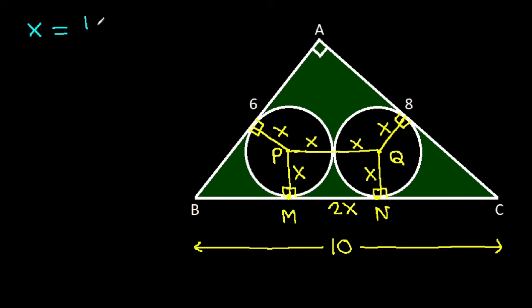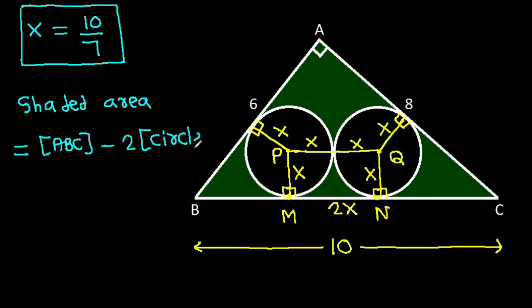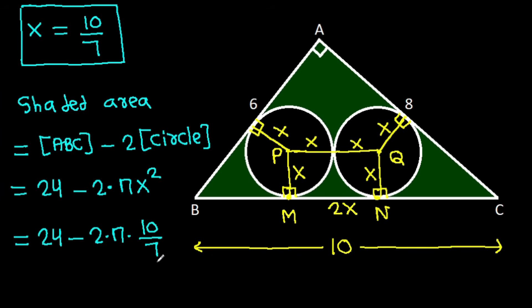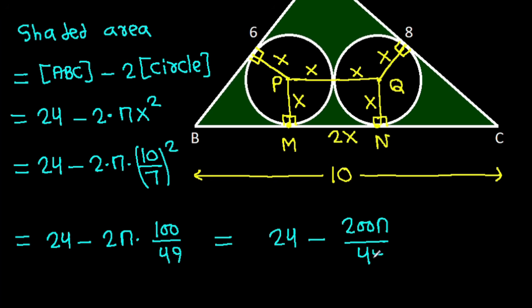We get X is 10 over 7. The shaded area will be area of ABC minus 2 times area of circle. It is 24 minus 2 times pi times X squared, which is 24 minus 2 pi times (10 over 7) squared, giving 24 minus 200 pi over 49. Thank you.